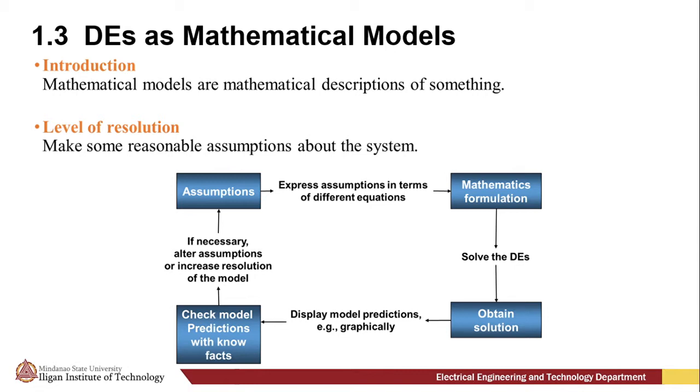Next, we make a set of reasonable assumptions or hypotheses about the system we are trying to describe. This assumption will also include any empirical laws that may be applicable to the system. Then we express these assumptions in terms of a differential equation.